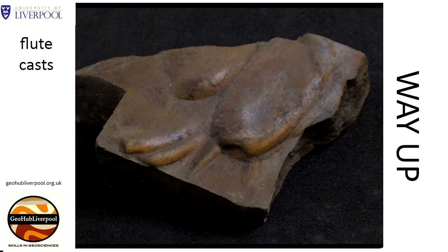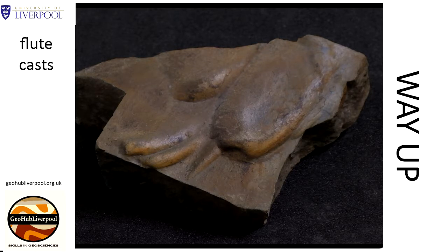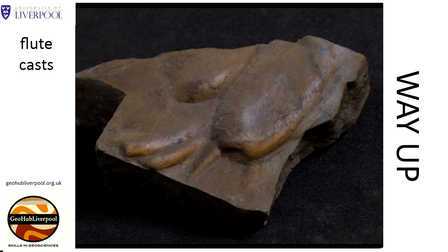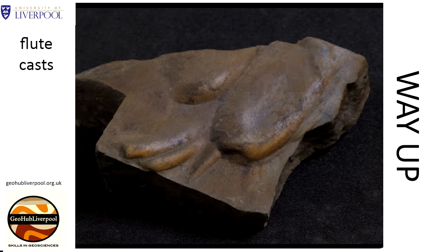This sedimentary structure was formed by a turbidity current, a rapid, downhill flow of dense material, often water-saturated sediment. As the turbidity current flows, it scours hollows, which are called flutes. Sediment carried by the turbidity current settles and fills these hollows to make casts of the hollows, or flute casts.